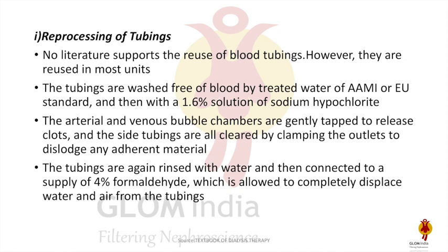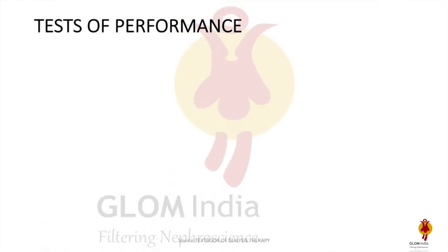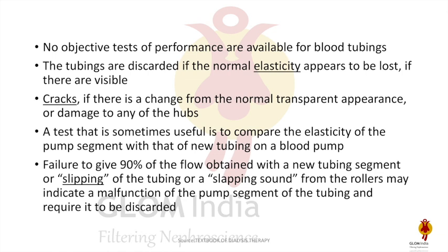Regarding reprocessing of tubing: there is no literature available for reuse of blood tubing, however it is reused in most units. The tubing is rinsed free of blood with water, then with 1.6% sodium hypochlorite. The arterial and venous bubble chambers are gently tapped to release clots, and the side tubings are cleaned by clamping the outlet to dislodge any adherent material. The tubings are again rinsed with water, then connected to a supply of 4% formaldehyde. There are no objective performance tests for blood tubing; loss of elasticity, cracks, or a squeaking sound from the tubing are indicators that it is not in a proper state to be used.